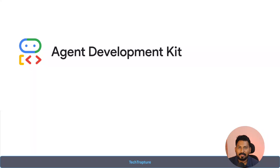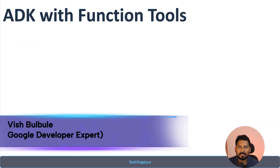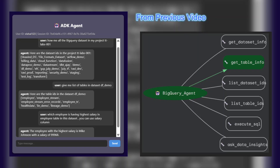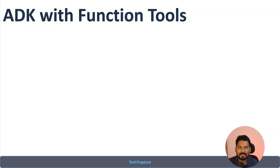Hello, welcome back to Tech Capture. In this playlist, 'Learn ADK' — Google's Agent Development Kit — we are going to discuss ADK with function tools. In our previous videos, we created our first ADK agent, then an agent with tools, discussed different types of tools, built-in tools like BigQuery and Google Search, third-party tools like LangChain and Wikipedia, and the QAI web scraping tools.